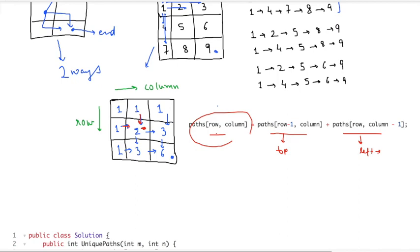So row minus one from top to bottom or down, and column minus one from left to right. So I can sum this to get total ways at this particular cell if I need to reach this cell.